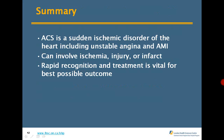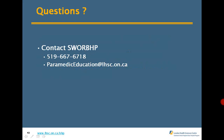Summary: Acute coronary syndrome is a sudden ischemic disorder of the heart including unstable angina and acute myocardial infarction. It can resolve or involve ischemia, injury, or infarct. The three I's — ischemia, injury, and infarct. Rapid recognition and treatment is vital for the best possible outcome. For questions, contact the Southwest Regional BASE Hospital program at the number or email address provided.